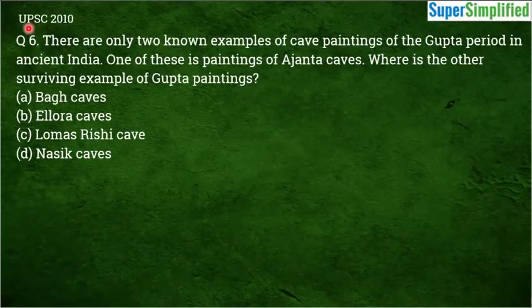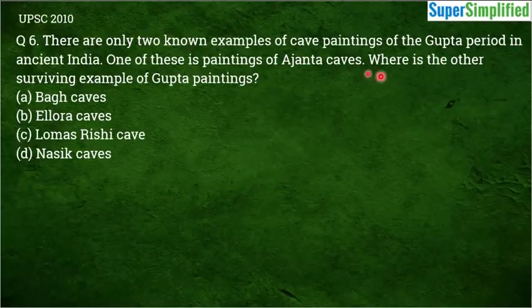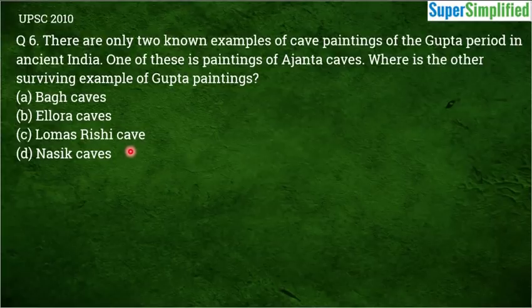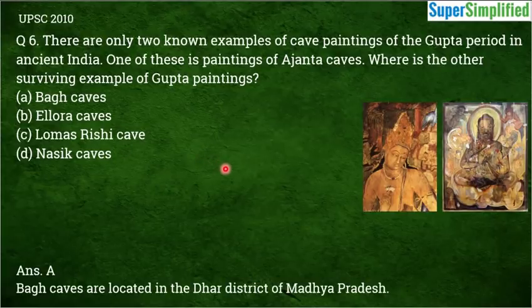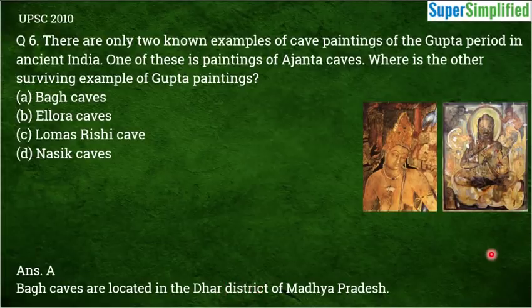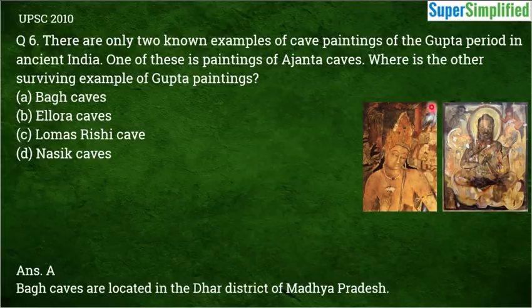Question number 6, from UPSC 2010: There are only two known examples of cave paintings of the Gupta period in ancient India. One is the Ajanta Caves. Where is the other surviving example of Gupta painting located? Options: Baag Caves, Ellora Caves, Lomas Rishi Cave, or Nasik Caves. The correct answer is A — Baag Caves, located in Dhar District, Madhya Pradesh. On screen you can see a photograph of a mural wall painting from Baag Caves on the right, and the famous Ajanta cave painting on the left.